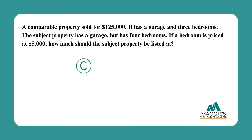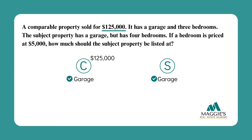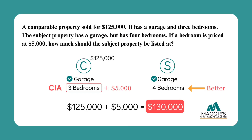I'll put a C for the comparable property and an S for the subject property. The comparable sold for $125,000. Both properties have a garage. The comparable has three bedrooms while the subject has four bedrooms. The comparable is inferior since it has fewer bedrooms, so we use CIA and add $5,000 to the comparable sales price of $125,000, making the subject property's price $130,000.